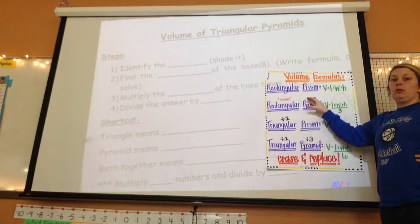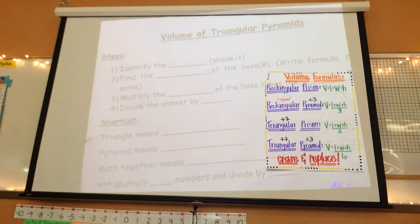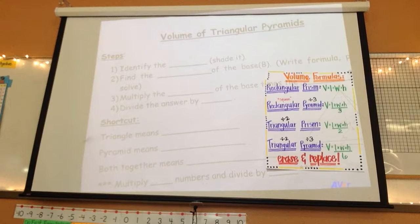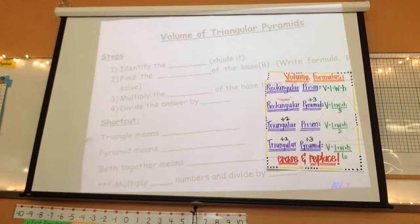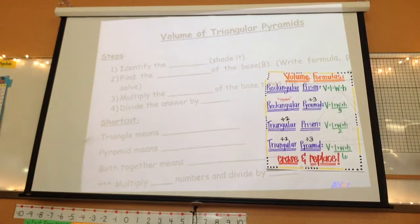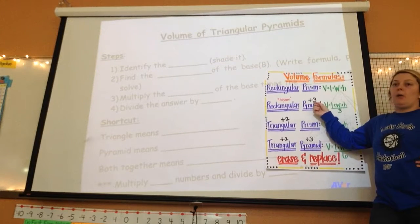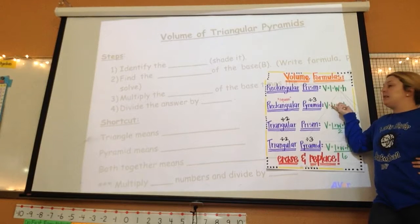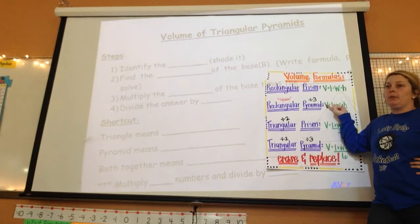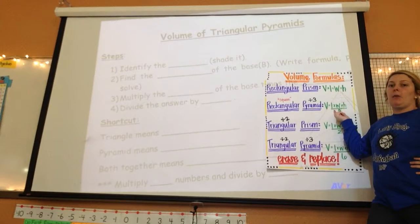This one, the first word is rectangle. It might also be a square. But pyramid means that I divide by what? Three. So I used the same formula up top, but I just put divide by three.